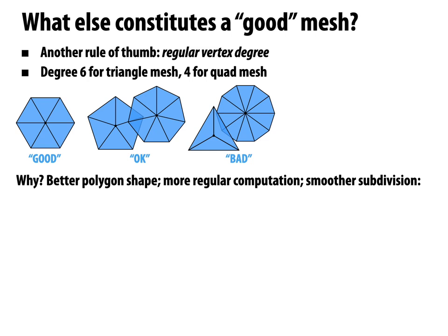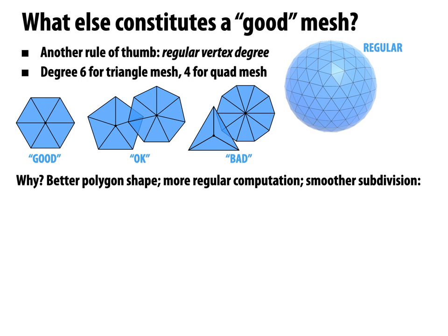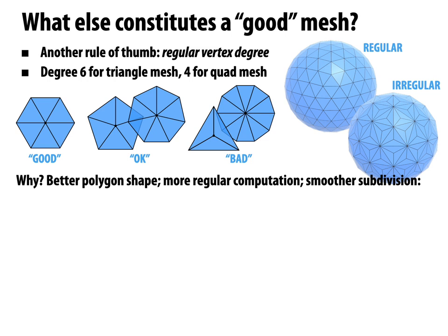Why care about vertex degree? For triangles to be close to equilateral, the tiling has to look like a plane tiling, which means degrees close to 6. If triangles have very irregular degree, it's very hard to arrange them with good shape — there is a relationship between vertex degree and triangle shape. Another reason for regular degree is it leads to more regular computation: if the connectivity is regular, you can map mesh regions onto regular arrays for efficient parallel computation.